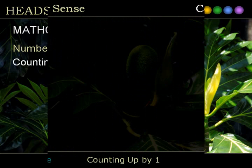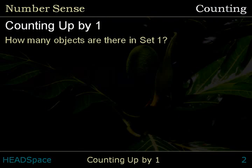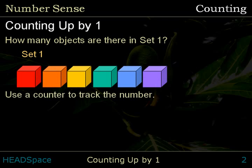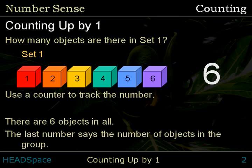Counting by 1. How many objects are there in Set 1? Use a counter to track the number as you count. 1, 2, 3, 4, 5, 6. There are 6 objects in all. The last number says the number of objects in the group.